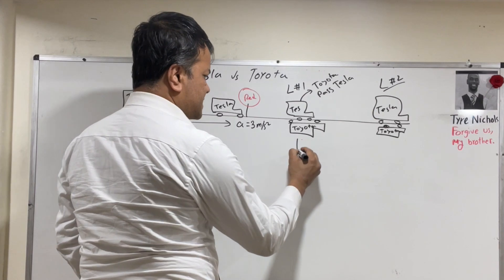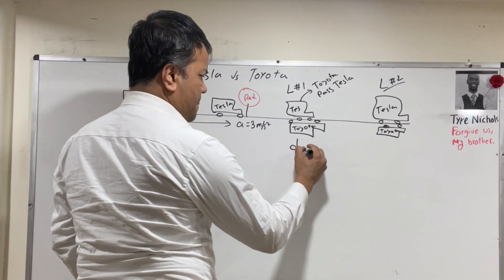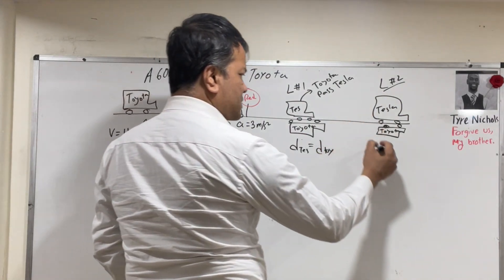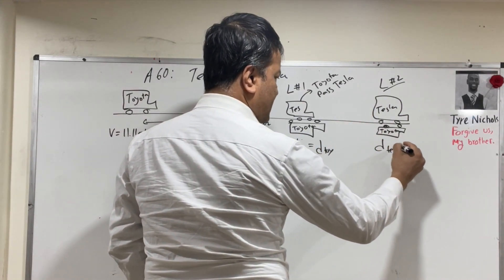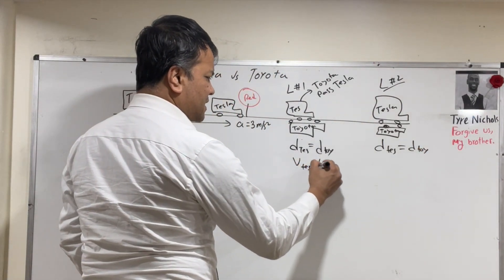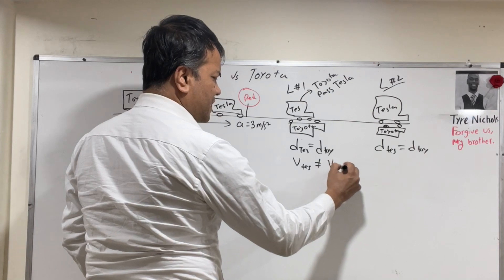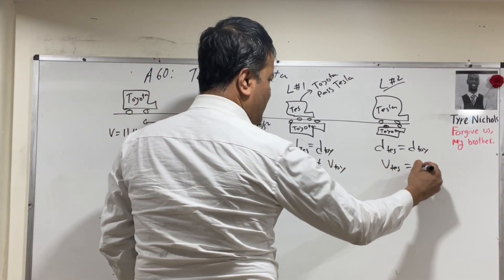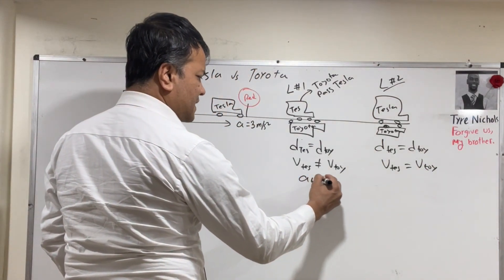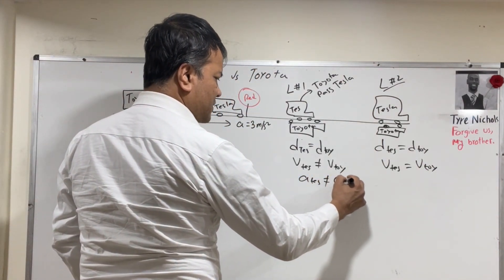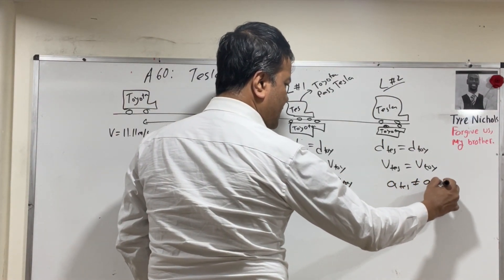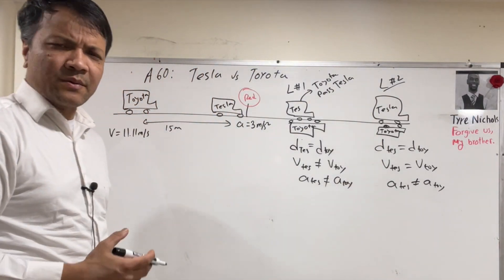At location one, the distance of Tesla equals the distance of Toyota, and at location two, the distance of Tesla also equals the distance of Toyota. However, the velocity of Tesla is not equal to the velocity of Toyota at either location, and the acceleration of Tesla is not equal to the acceleration of Toyota at either location.